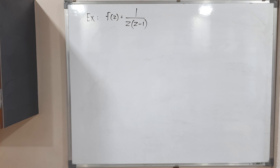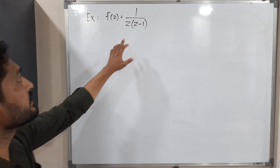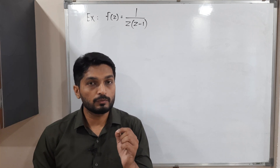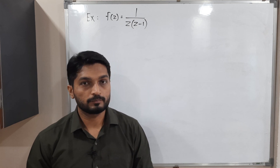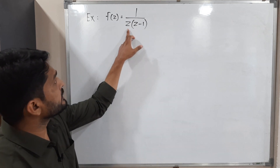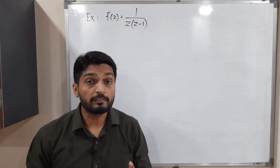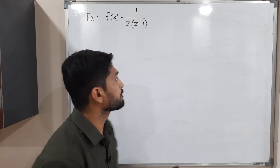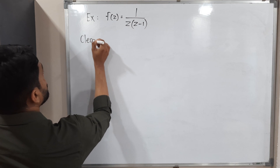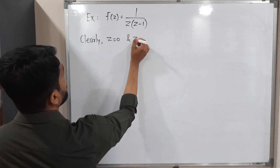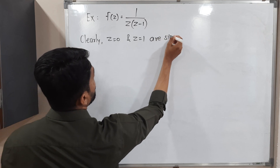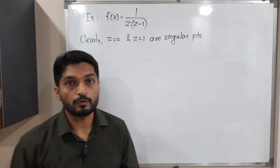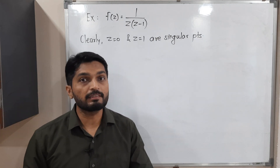Let us discuss an example. We have the function 1 divided by z(z minus 1). We have to find the singular points first. If I put z equals 0, the denominator will be 0 and the function is not analytic. Similarly, if z equals 1, the denominator is also 0. So z equals 0 and z equals 1 are both singular points.